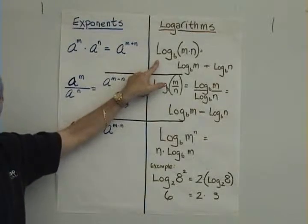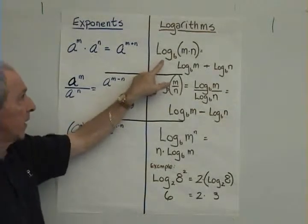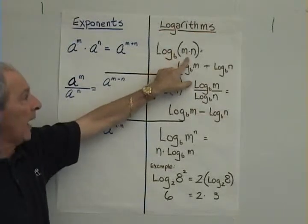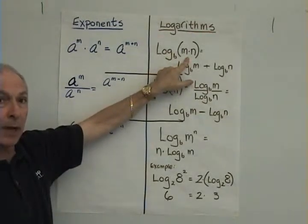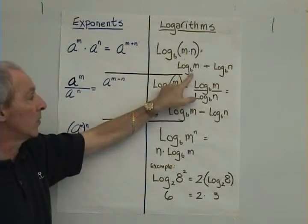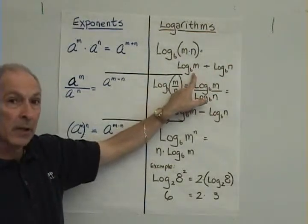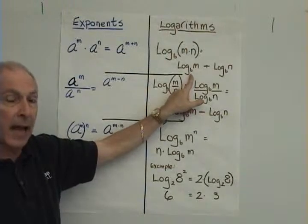The parallel property for logarithms is when you have a logarithm in a specific base and two numbers are being multiplied, what you can do is you can split them apart and add the logarithms. Because logarithms signify exponents,